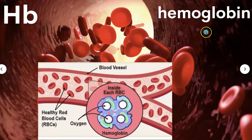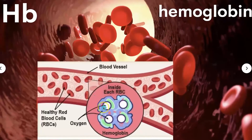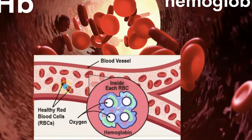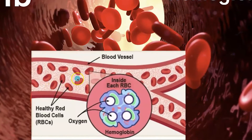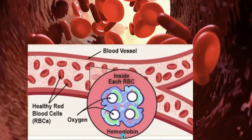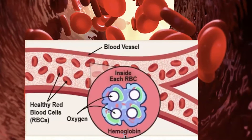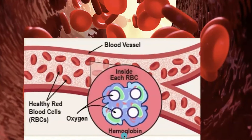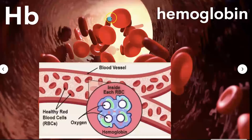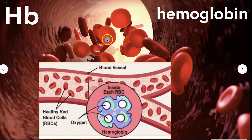HB stands for hemoglobin. Inside each red blood cell, you have hemoglobin, which is a protein that carries oxygen. The red blood cells are a concave disc shape.